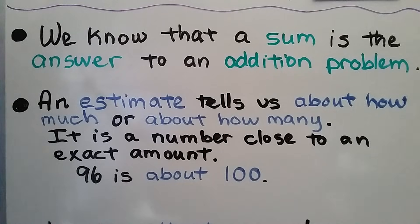We know that a sum is the answer to an addition problem. An estimate tells us about how much or about how many. It's a number close to an exact amount, like 96 is about 100. It's almost 100. That would be an estimate.